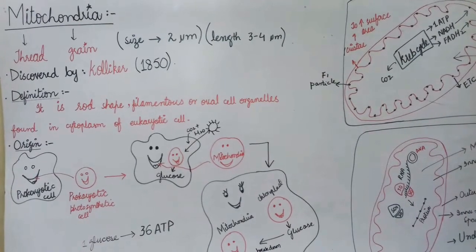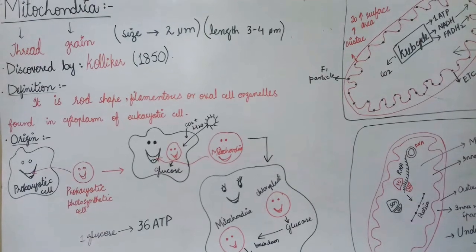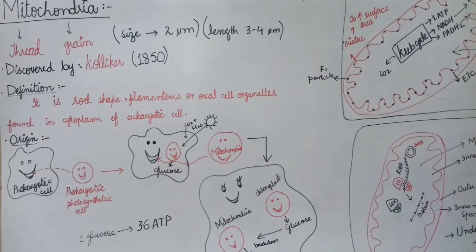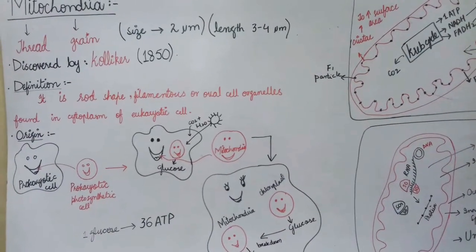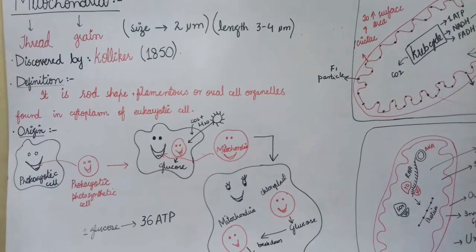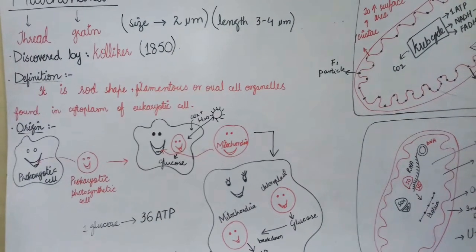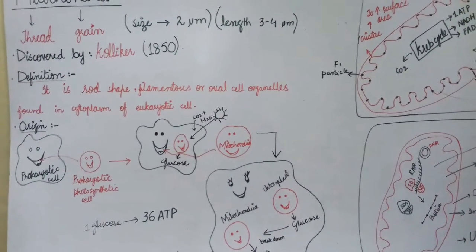It was discovered by Kölliker in 1850. The definition of mitochondria is: it is a rod-shaped, filamentous, or oval cell organelle found in the cytoplasm of eukaryotic cells. Mitochondria are present in cytoplasm of eukaryotic cells.